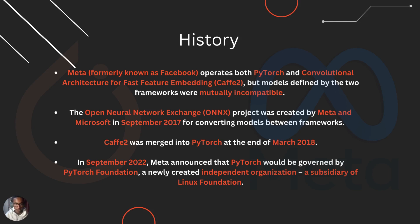The Open Neural Network Exchange, ONNX, allows you to save a trained model in a format that can be shared with other AI researchers so they can deploy and evaluate it. It was originally created by Meta and Microsoft in September 2017 for converting models between frameworks. CAFE2 was merged into PyTorch at the end of March 2018, and in September 2022, Meta announced that PyTorch would be governed by the PyTorch Foundation, a newly created independent organization and a subsidiary of the Linux Foundation.